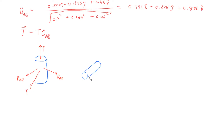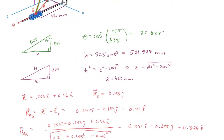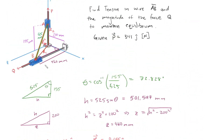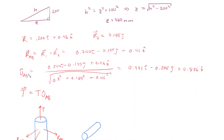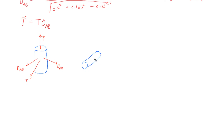For body B: the body cannot move in the X direction and cannot move in the Y direction, so there are reaction forces RBX pointing in the X direction and RBY pointing upward. There's an applied force Q acting in the Z direction, and a tension force T being pulled in the direction from B toward A.